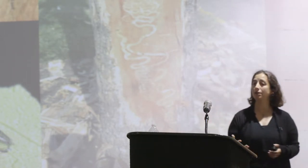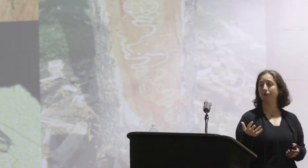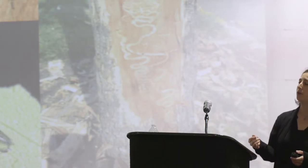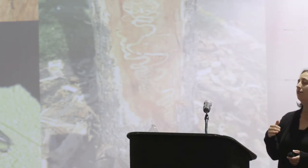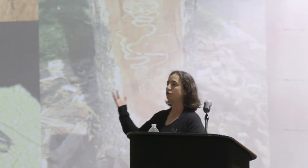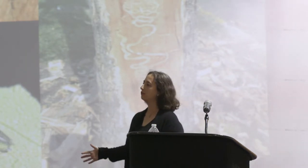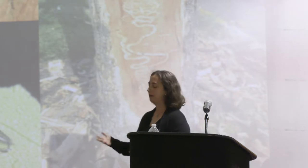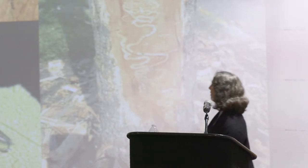The cambium is the living layer of cells within the tree — the live part just underneath the bark. As the larva feeds on the cambium layer, it cuts off the tree's ability to move water from the roots up into the leaves, and then the sugar produced in photosynthesis back down to the rest of the tree, essentially girdling the tree and killing it.